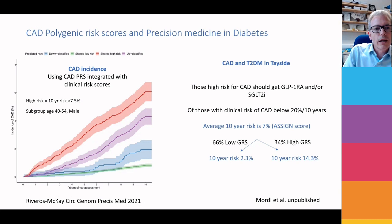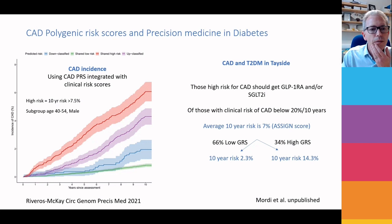When we look at the local population and identify people with a coronary artery disease risk below 20% — who might not get GLP-1 receptor agonists or SGLT2 inhibitors — the group with the high genetic risk score has their risk uplifted from 7% to 14% by virtue of taking into account their genetic risk score.